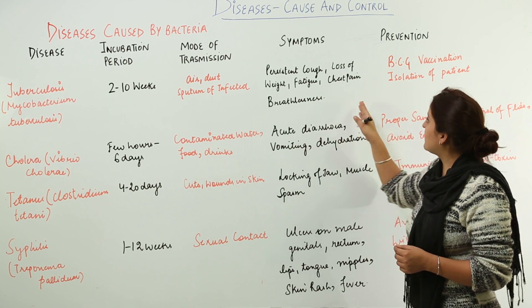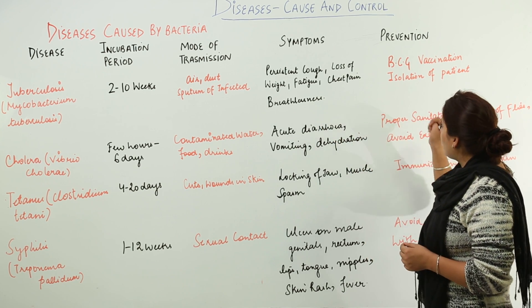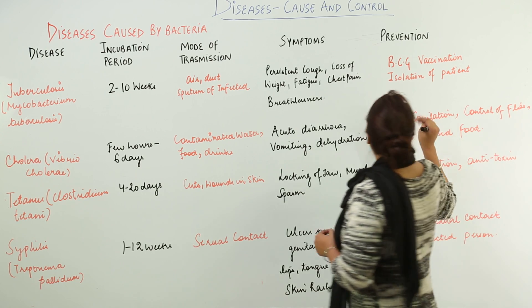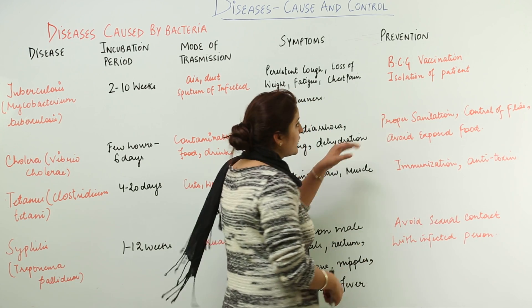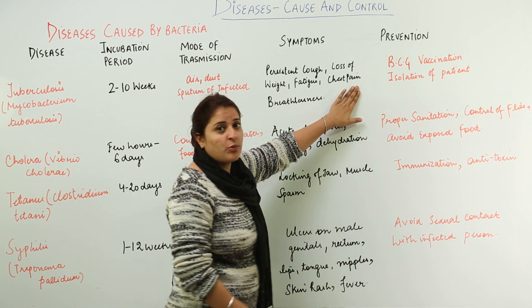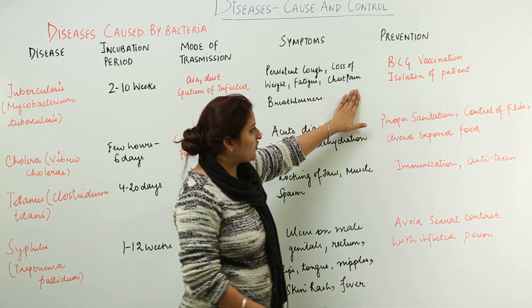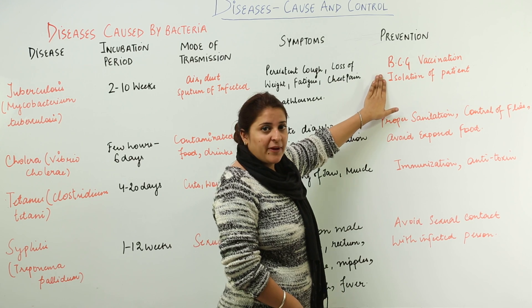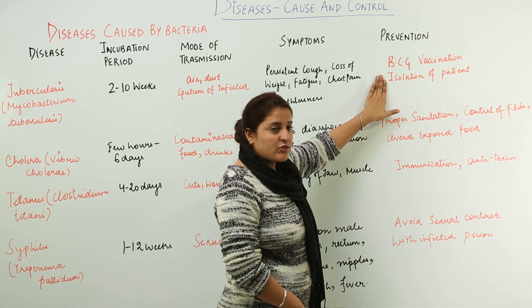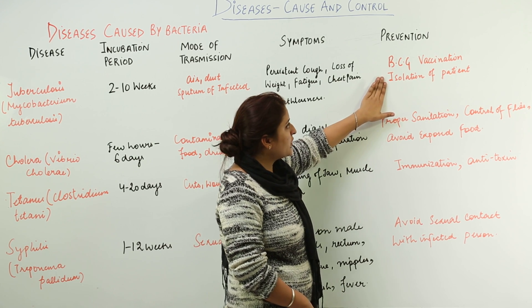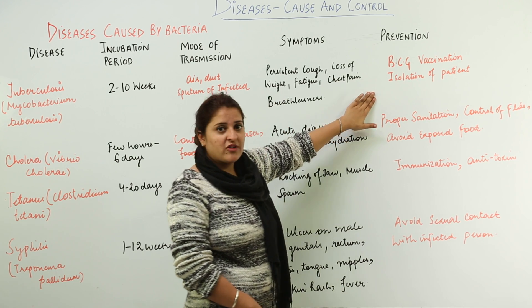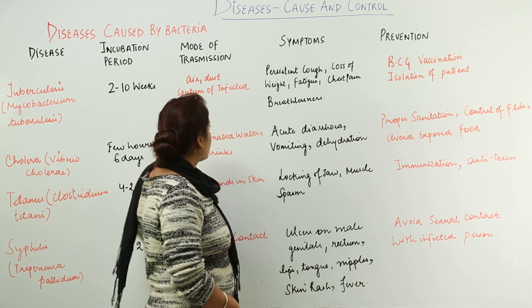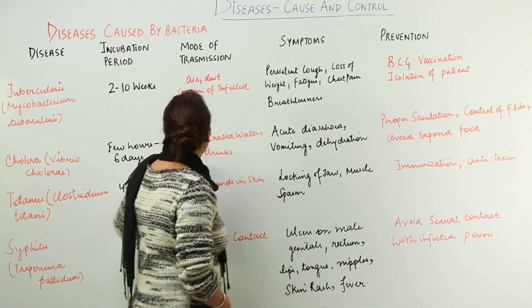These are a few symptoms of this disease. The prevention method for tuberculosis is through BCG vaccination and by keeping the patient isolated. These are the preventive measures by which tuberculosis can be prevented.